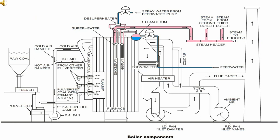Here we can see the passage of steam from the steam drum. From the steam drum, the steam goes to the primary superheater, then to the D Superheater. In the D Superheater, spray water from the feed water pump is injected. Then from the D Superheater, the steam goes to the steam header.